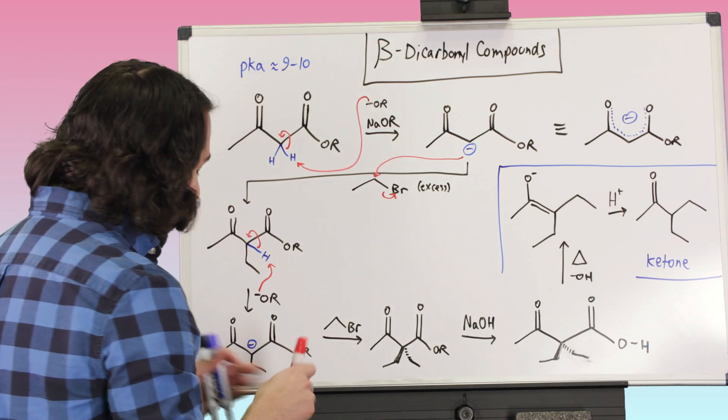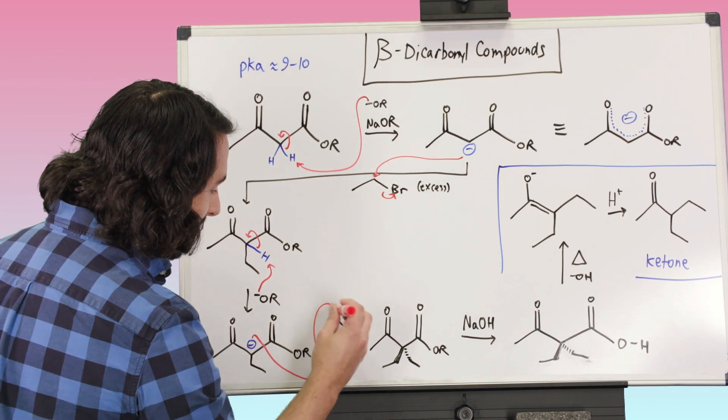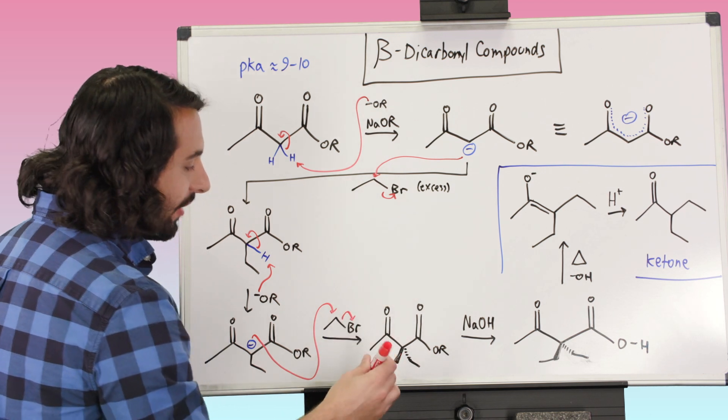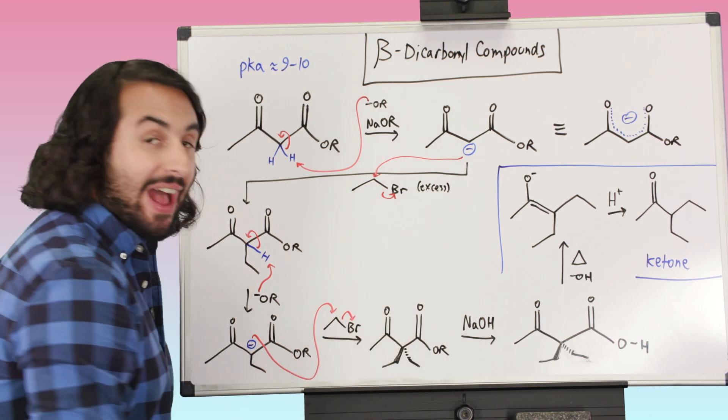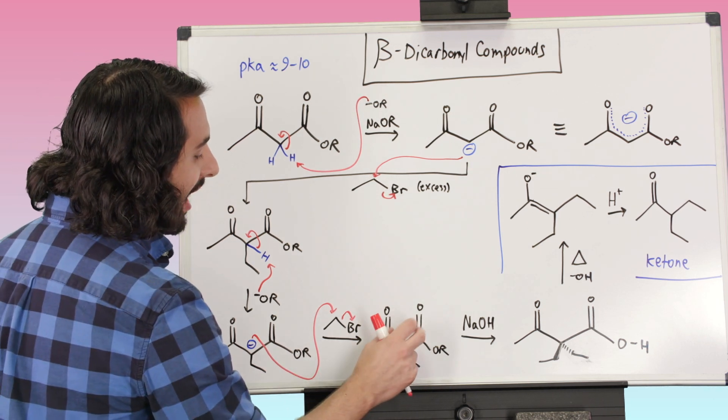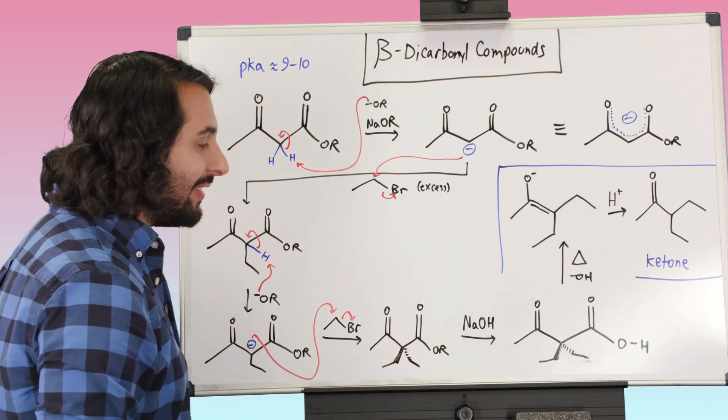So we are just going to do the same thing. We have got another anion and why don't we do another SN2 here. Let's just go and attack there, kick that off. And so we have attached two ethyl groups at this alpha position, the position that is alpha to both of those carbonyls. So this is one thing we could do. We could alkylate.